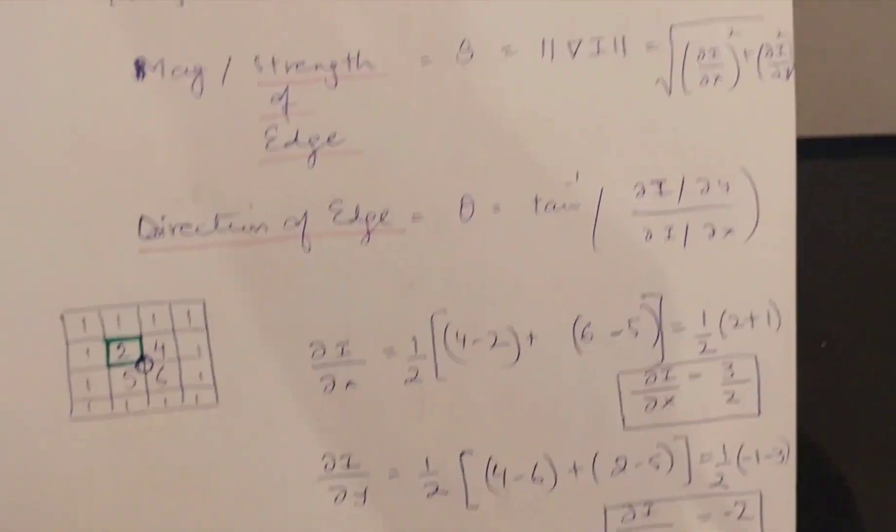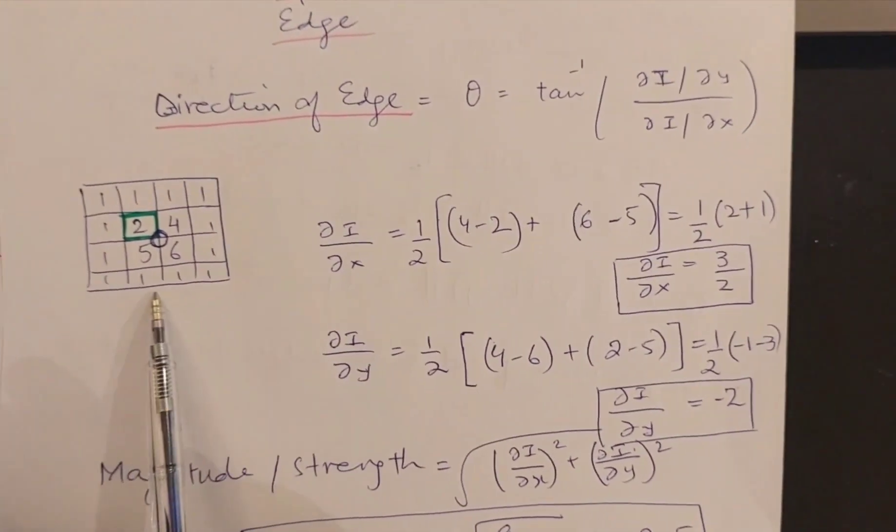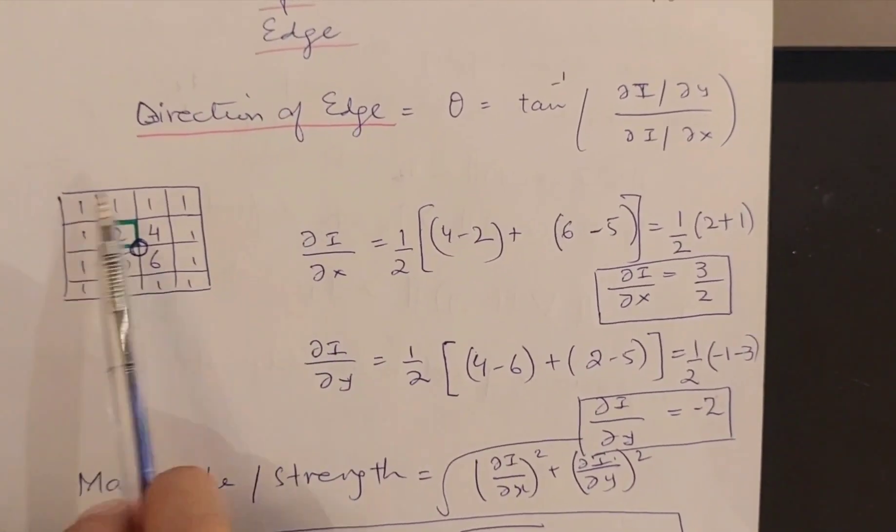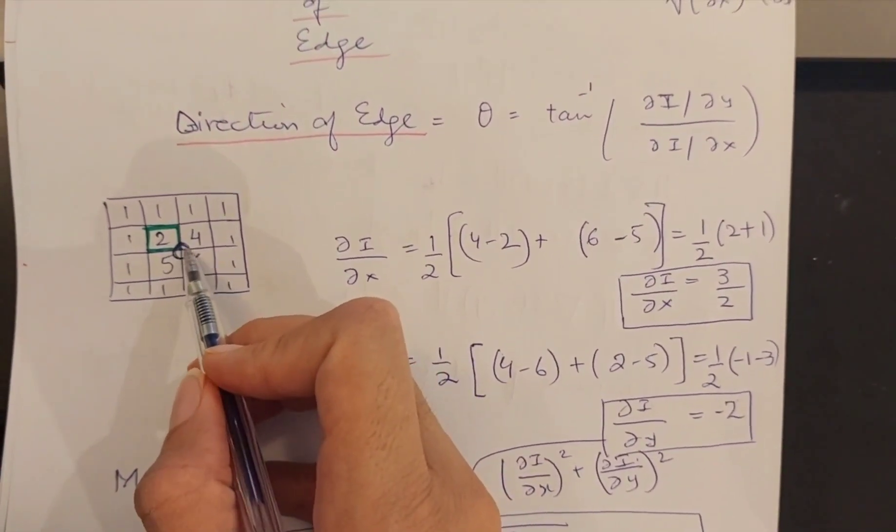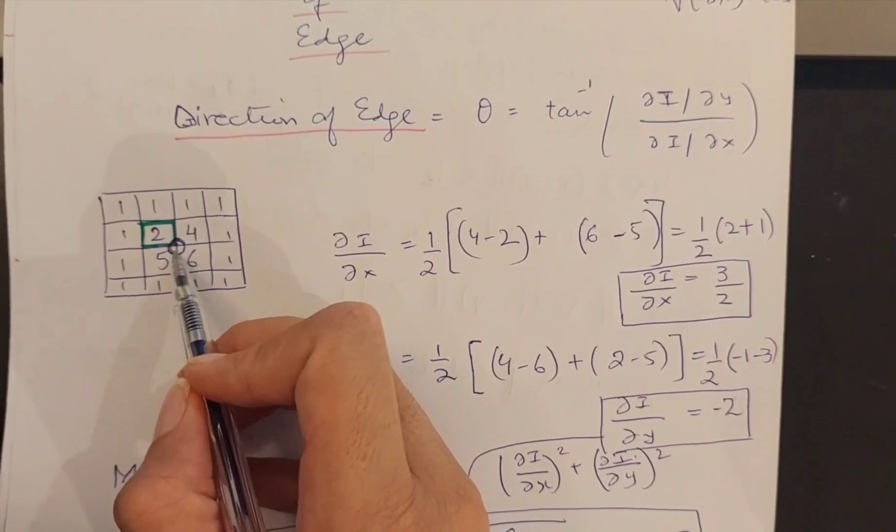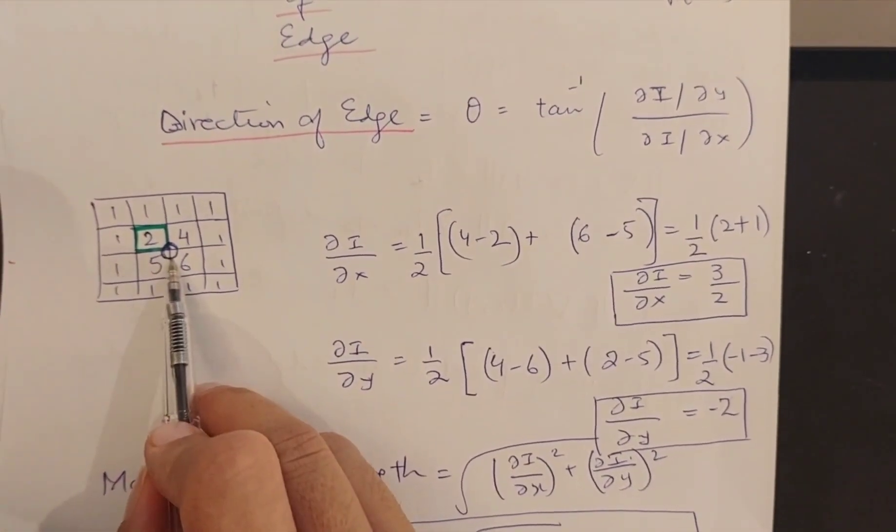So right now we have this image which has got these pixels, and I want to know whether this point here, in between this junction, whether it's an edge or not. If I want to find that it's an edge or not with the help of this gradient operator, I will simply find the x derivative and then I will find the y derivative.